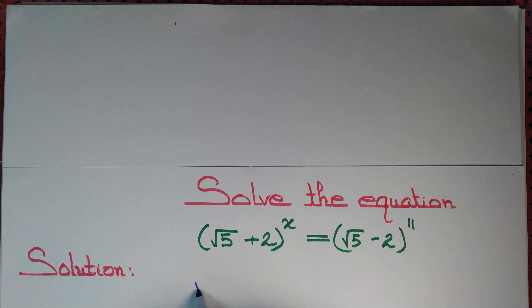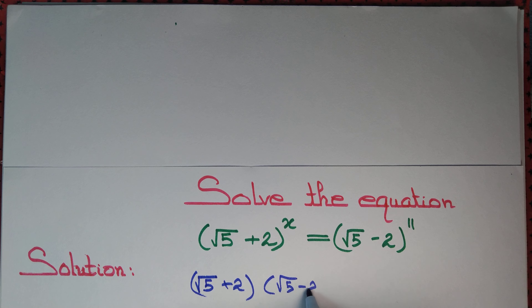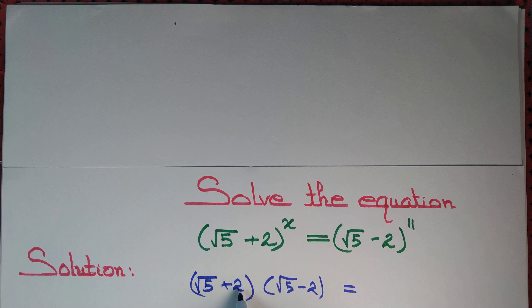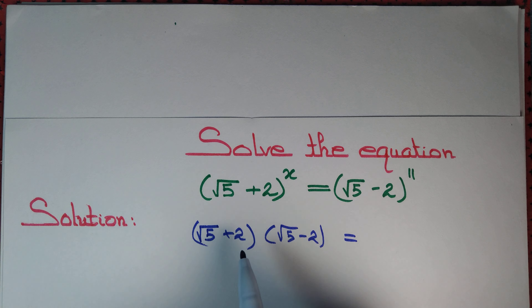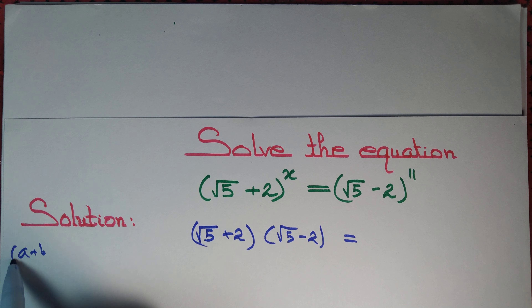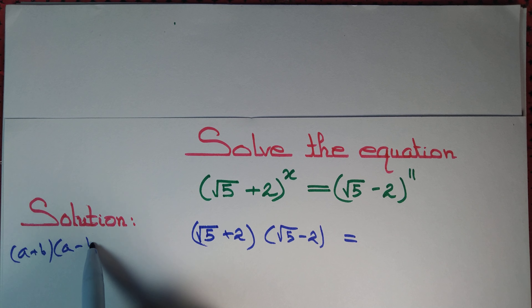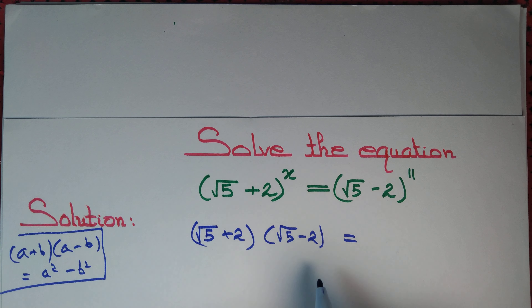First, we observe that (√5 + 2)(√5 - 2) is an expression of the type (a + b)(a - b), so we can use the formula (a + b)(a - b) = a² - b².